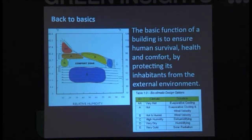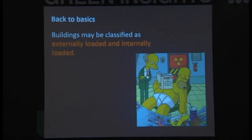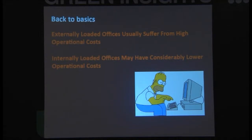What we're looking to do is provide a building where we're within the comfort zone. So buildings can be classified as externally loaded and internally loaded. Externally loaded offices usually suffer from high operational costs. Now in Malaysia we have externally loaded buildings because all the heat comes through the windows. We build big glass buildings and all that heat comes in and then we try to cool it. Internally loaded offices have considerably lower operating costs because then the heat is coming from the people, from the equipment that they're using.